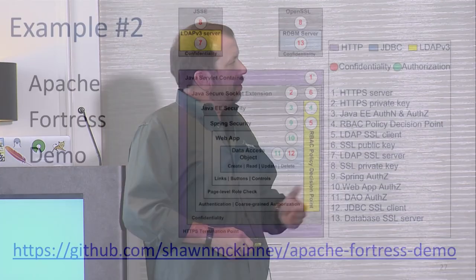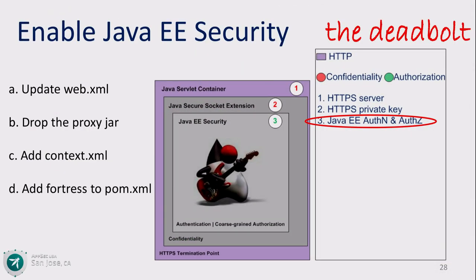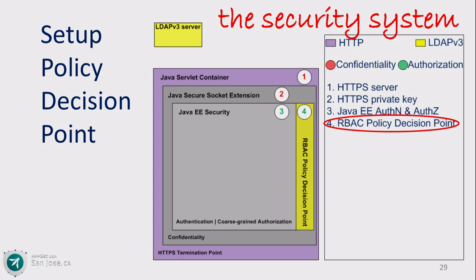Looking at the layers and what we're doing in them — we've got Java EE security that's going to be the outer perimeter, the deadbolt. This security system has to have what I call a policy decision point. What we're talking about here in this example is setting up a role-based access control policy decision point.